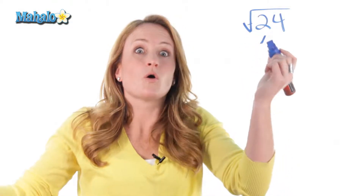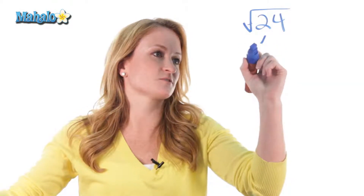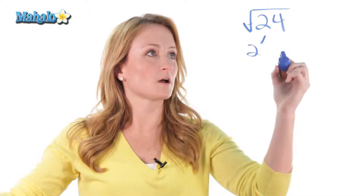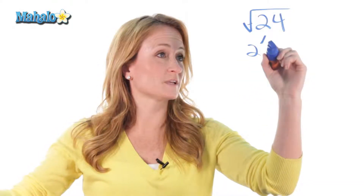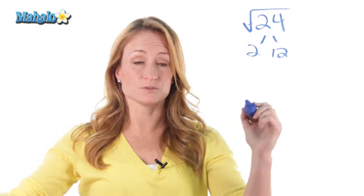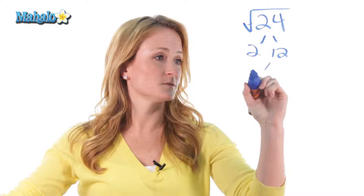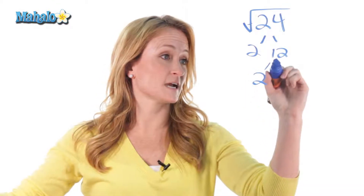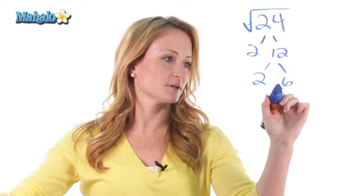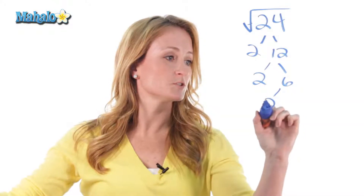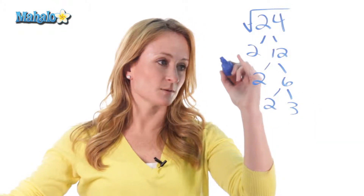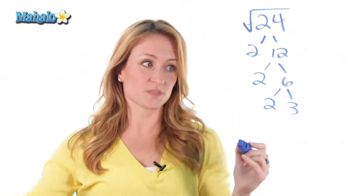Always start with 2 if you can, because it just makes your life easier. So out of 24, we would get 2 times 12. We can reduce 12 to 2 times 6, and we can break 6 down further into 2 times 3. Now it's broken down as small as possible.